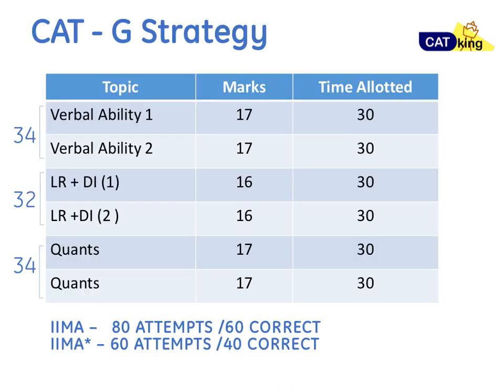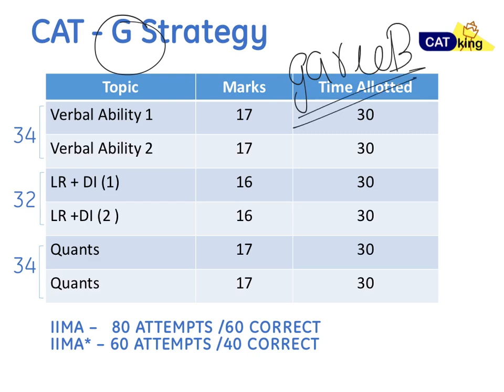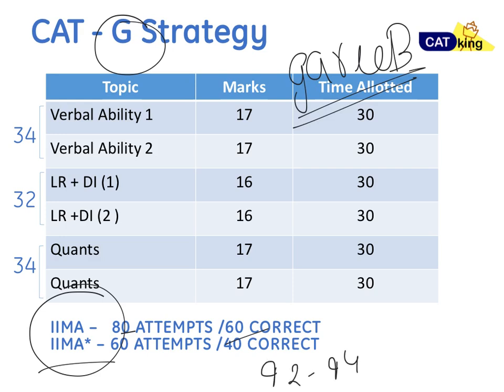The G strategy stands for the Gareeb strategy — I'm making it funny but it's really serious stuff. This is for people who have slogged but haven't given many mocks. Looking at the targets: IIM Ahmedabad requires 80 attempts and 60 correct. IIM Amritsar — which is IIM A star — requires approximately 92 to 94 percentile, meaning you need to attempt 60 questions and get 40 right.